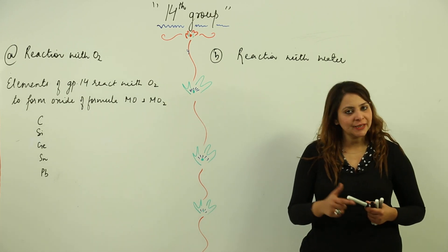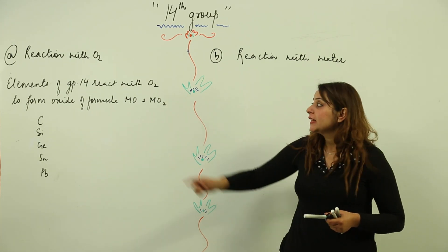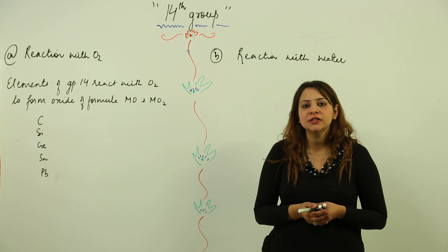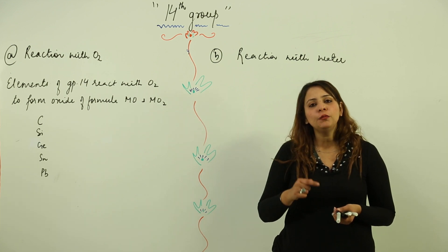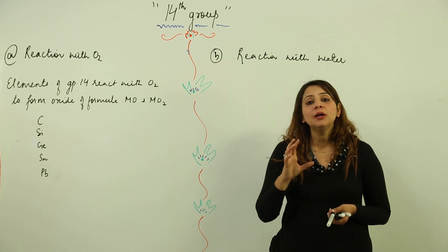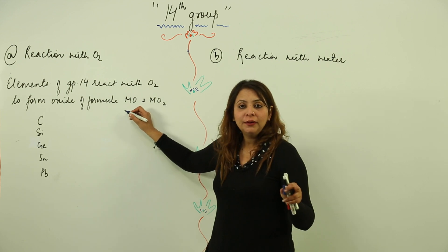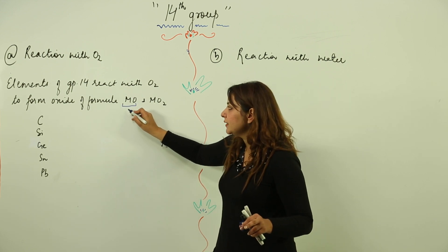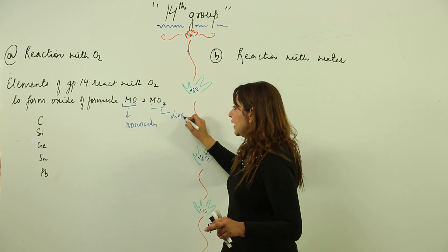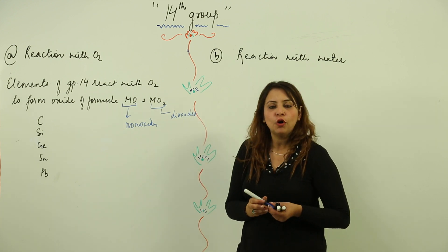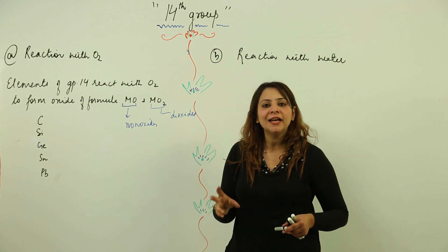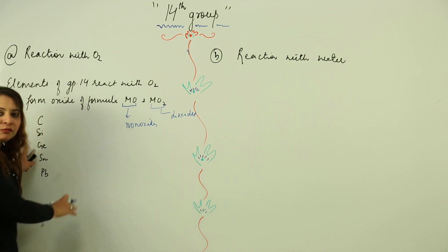We are going to start with the first chemical property of Group 14, that is reaction with oxygen. Whenever any substance reacts with oxygen, it forms its oxide. Group 14 elements also react with oxygen to form their respective oxides. The general molecular formula shows that they form monoxides as well as dioxides. So let us write the monoxides and dioxides of this family — the carbon family: carbon, silicon, germanium, tin, and lead.